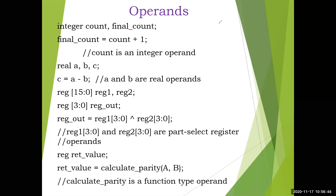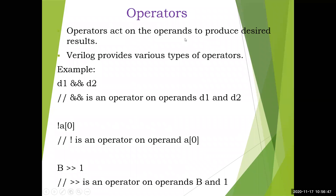Operators act on the operands to produce desired results. Verilog provides various types of operators — we will cover them in detail in the next video. For example, double ampersand (&&) is an operator on operands D1 and D2, and there is a clear difference between double ampersand and single ampersand that we will learn next. The negation symbol (~) is a one's complement operator on a single operand like A[0].